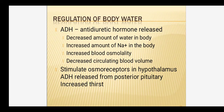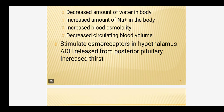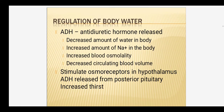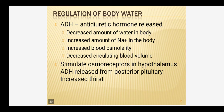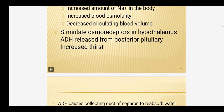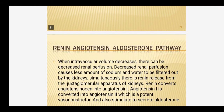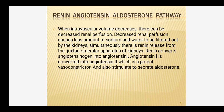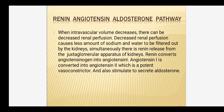Body water is regulated by hormones. First is anti-diuretic hormone (ADH), which reduces urine output and also stimulates thirst. When water quantity decreases in the body, ADH is released and stimulates the person to drink water. Second is the renin-angiotensin-aldosterone pathway, activated when plasma volume is decreased. This causes vasoconstriction, reduces urine output, and causes sodium retention — when sodium is retained, water is also retained.